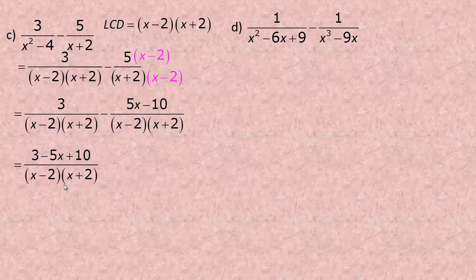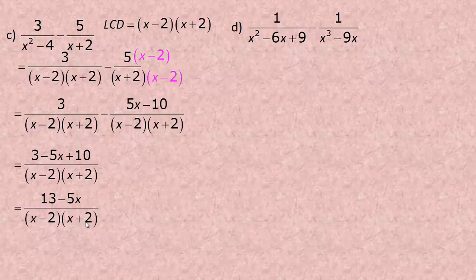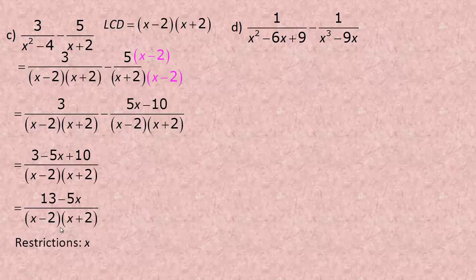Collecting like terms: 3 plus 10 is 13, minus 5x, over the common denominator x plus 2 times x minus 2. It's often useful to leave the denominator in factored form rather than multiplying it out to x squared minus 4. For restrictions: x equals 2 makes the x minus 2 factor 0, and x equals negative 2 makes the x plus 2 factor 0, so x cannot be plus or minus 2.